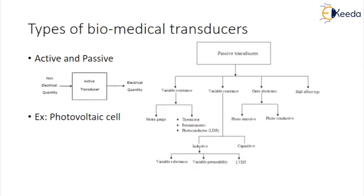In the medical field, many physical, chemical and optical properties are used to construct biomedical transducers. Basically, these are divided into two major categories: active transducers and passive transducers. Active transducers directly convert a non-electric quantity into an electrical signal and do not require an external electric supply. For example, a photovoltaic cell converts light energy into electrical energy. Passive transducers require an external electric supply for the conversion process — for example, a variable resistance connected in a Wheatstone bridge, which requires an external AC or DC supply to operate.